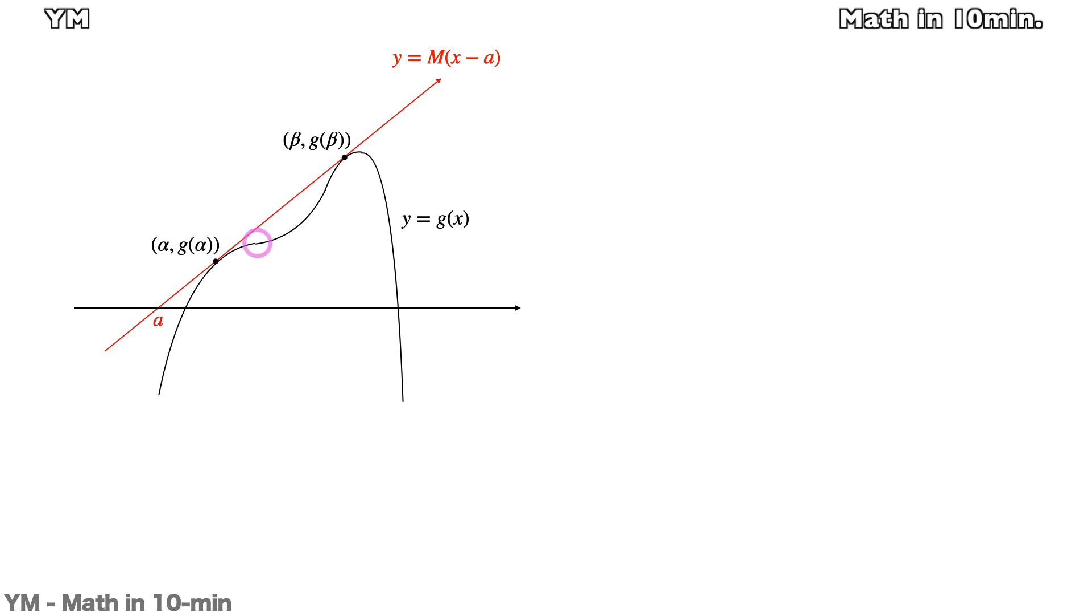Then the slope of this inflection point must be positive. Meanwhile, this red line is tangent to g(x) where x equals α and β, and the leading coefficient of the quadratic function g(x) is negative 1.